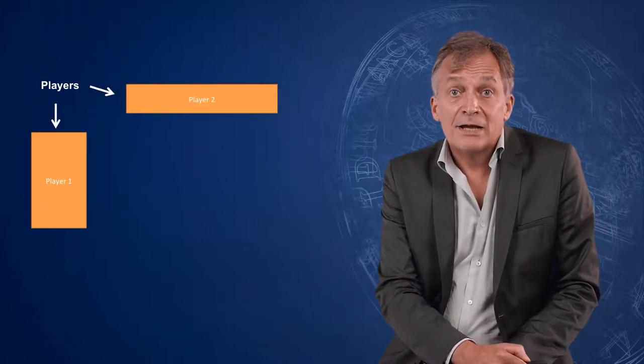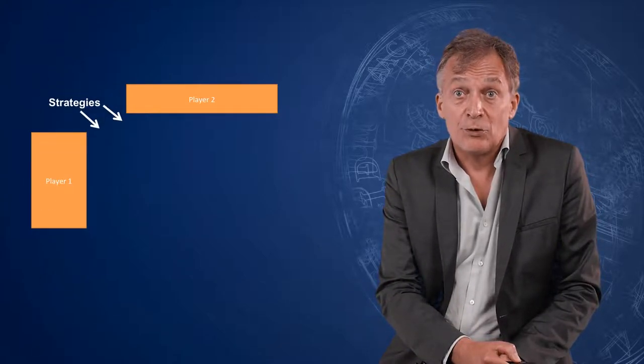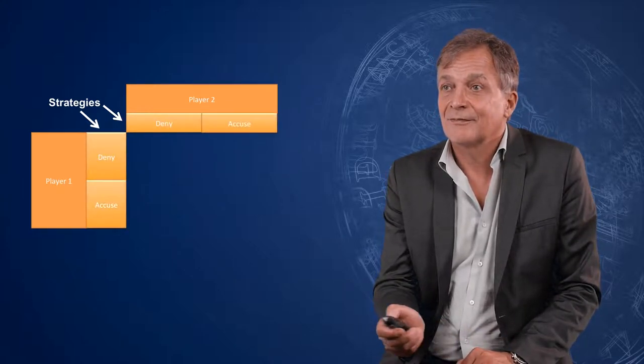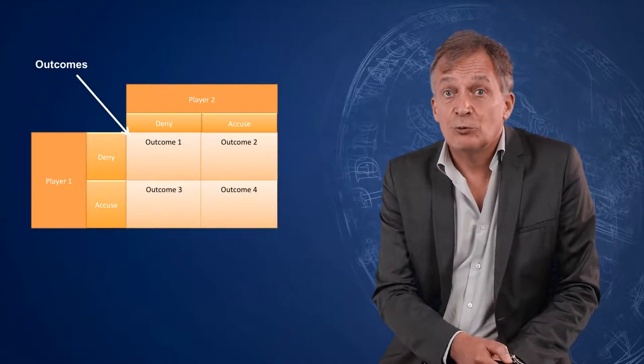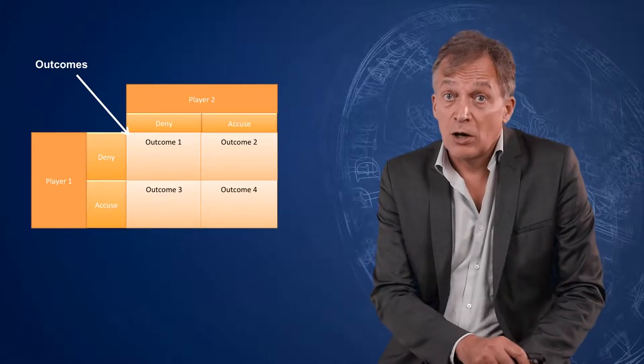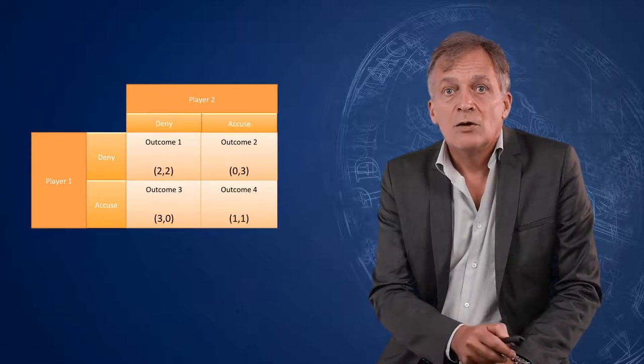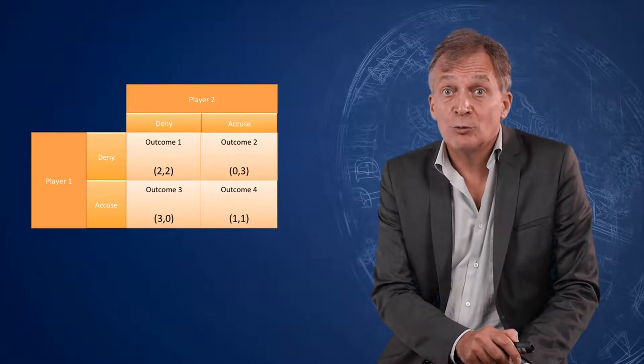The decision-making situation can be represented with a matrix in which we distinguish the two suspects as players. Each player has two options, which are called strategies. These are to deny the other's involvement or to accuse him or her. Using these strategies lead to outcomes, which are the four cells of the matrix. Each cell or outcome is associated with a payoff, which expresses the utility ranking of the outcome by the players. The first number refers to player one, the second number refers to player two.